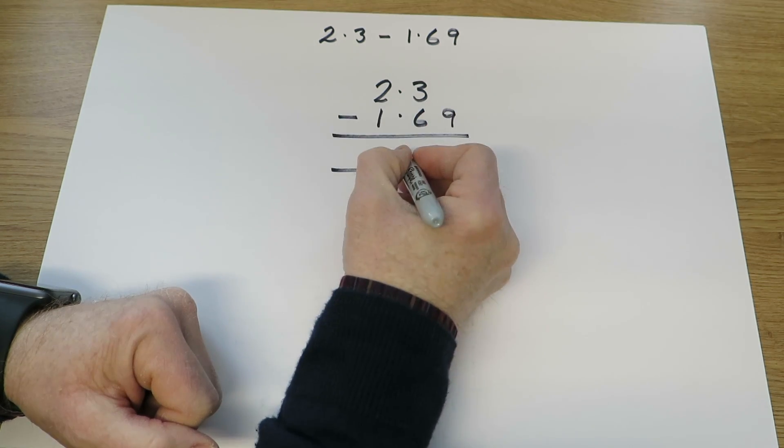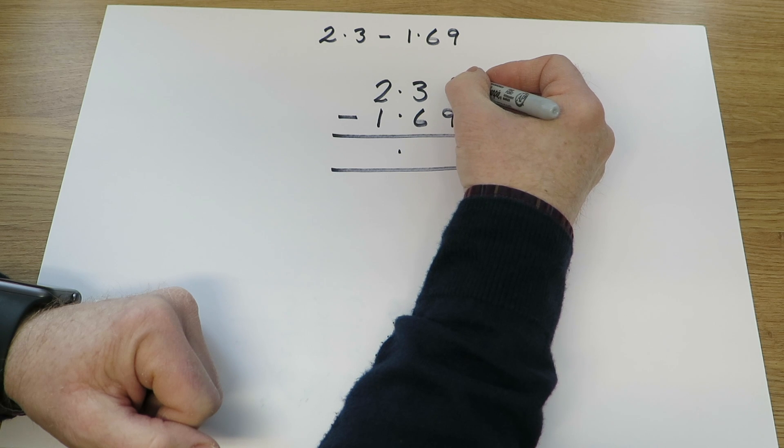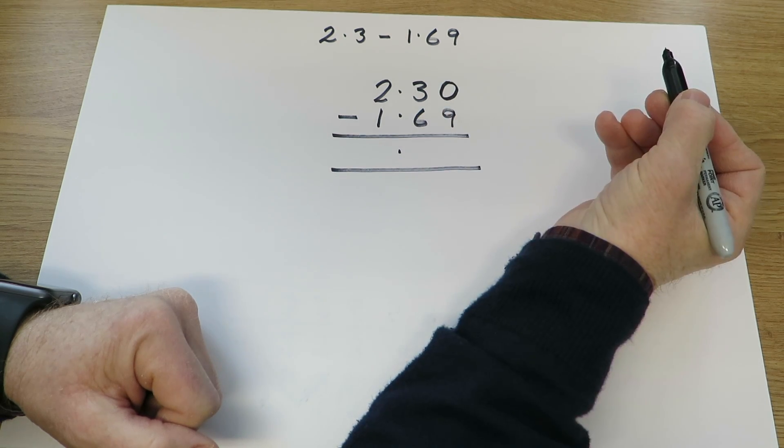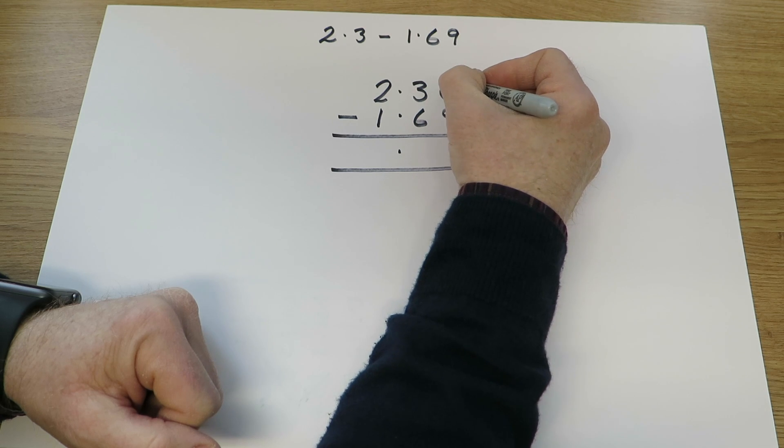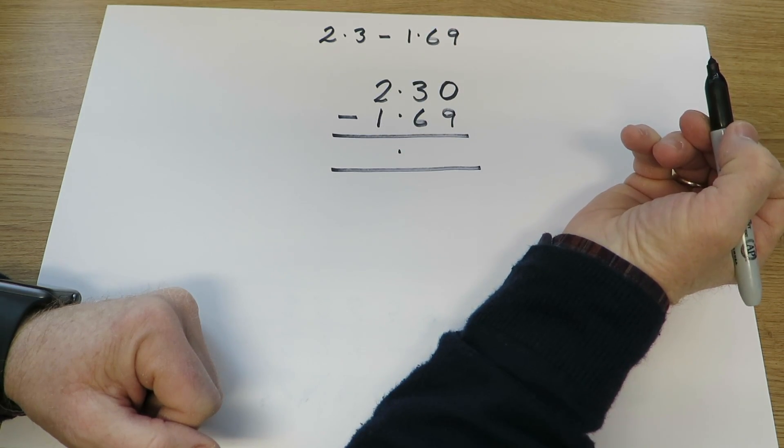So subtraction, let's put a point ready for the answer there. It's a lot easier if we put a 0 there. 2.30 is the same value as 2.3. These are the hundredths, the tenths, the units. We always keep the units in line.